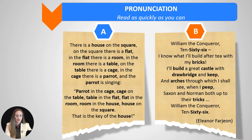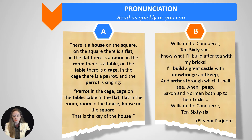I'll try to read this rhyme and tongue twister for you. William the Conqueror, 1066, I know what I'll build after tea with my bricks. I'll build a great castle with drawbridge and keep, and arches through which I shall see when I peep, Saxon and Norman both up to their tricks. William the Conqueror, 1066.